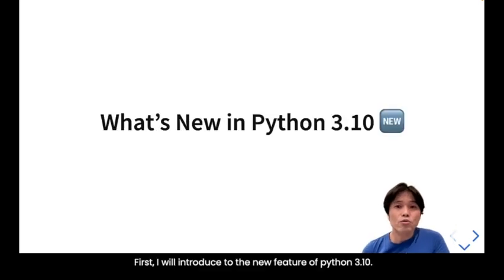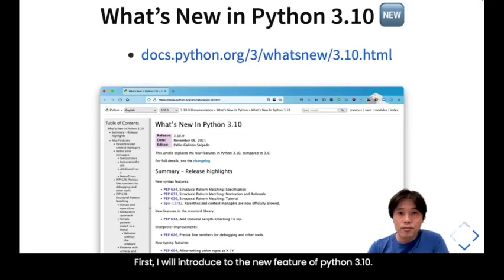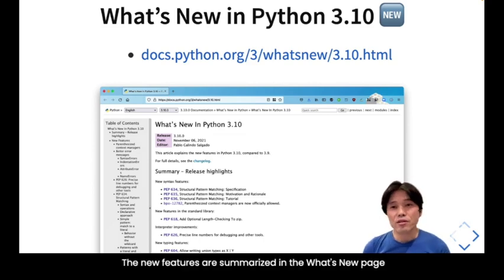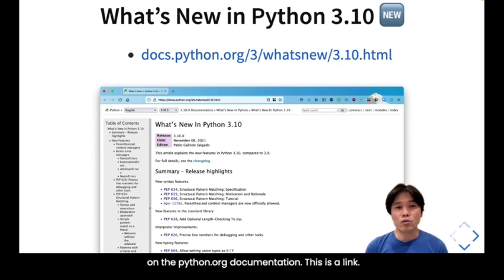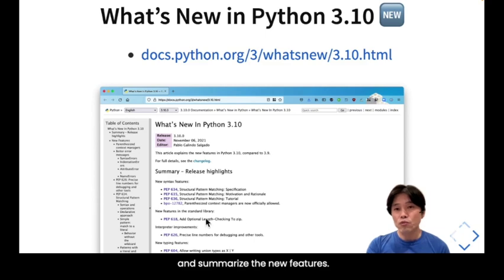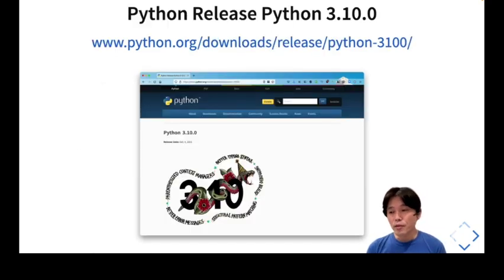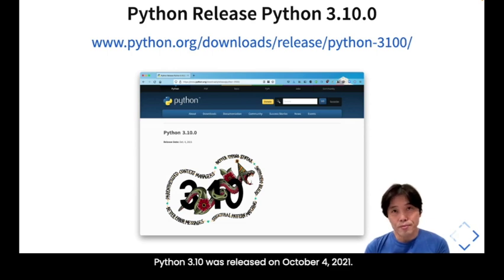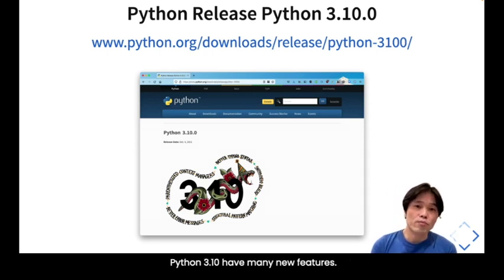I will introduce the new features of Python 3.10. The new features are summarized in the 'What's New' page on the Python official documentation. We can open the 'What's New in Python 3.10' page and review the new features. Python 3.10 was released on October 4, 2021, and has many new features.